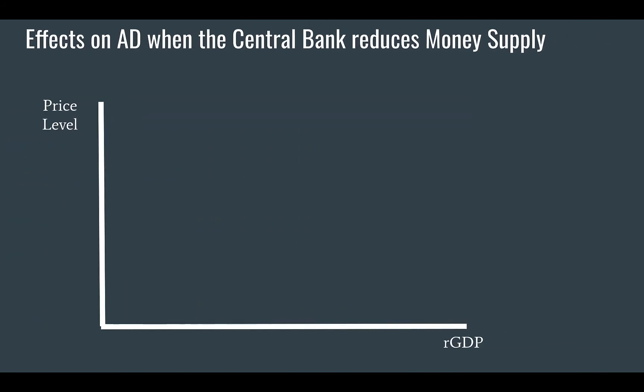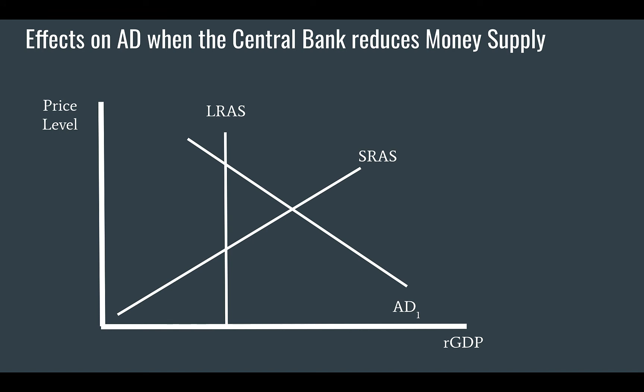Let's look at this when they reduce the money supply. On the vertical axis we have the price level, and on the horizontal axis we have real GDP — total production. We've got the long-run aggregate supply curve, the aggregate demand curve, and the short-run aggregate supply curve. And as we can see, this is the reason why the central bank would enact a contractionary monetary policy — what we are producing is beyond what is sustainable. It is an economy overheating.